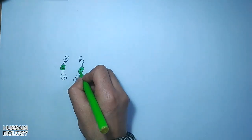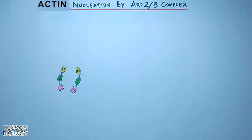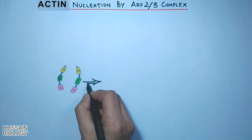Now let's see the mechanism of nucleation by ARP2/3 complex in detail. In this diagram we can see the two nucleation promoting factors, because for nucleation we need two NPFs to initiate the nucleation of actin subunits.